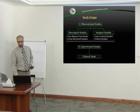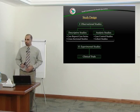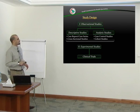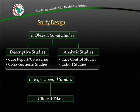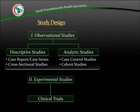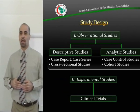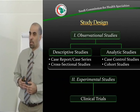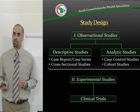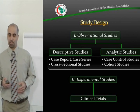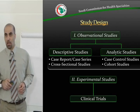Under observational studies, we have two categories of research: descriptive studies and analytical studies. Descriptive studies are descriptive in nature — for instance, assessing the prevalence of hypertension, the incidence of myocardial infarction, or the average survival rate in ICU patients. All of these questions are descriptive in nature; we are simply describing a certain occurrence of a disease or outcome.